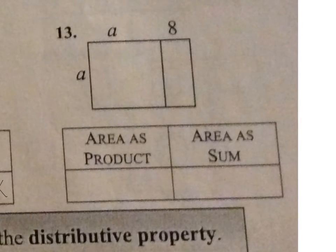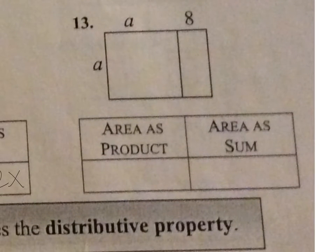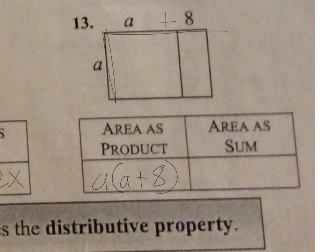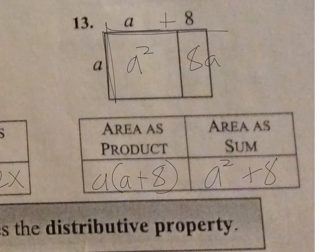So 13 is very similar to the number we just did in 12. A times A, the first one is area as a product, is A times A plus 8. So you do length times width. And then you do each rectangle individually. So A times A would be A squared. And A times 8 would be 8A. So A squared plus 8A.